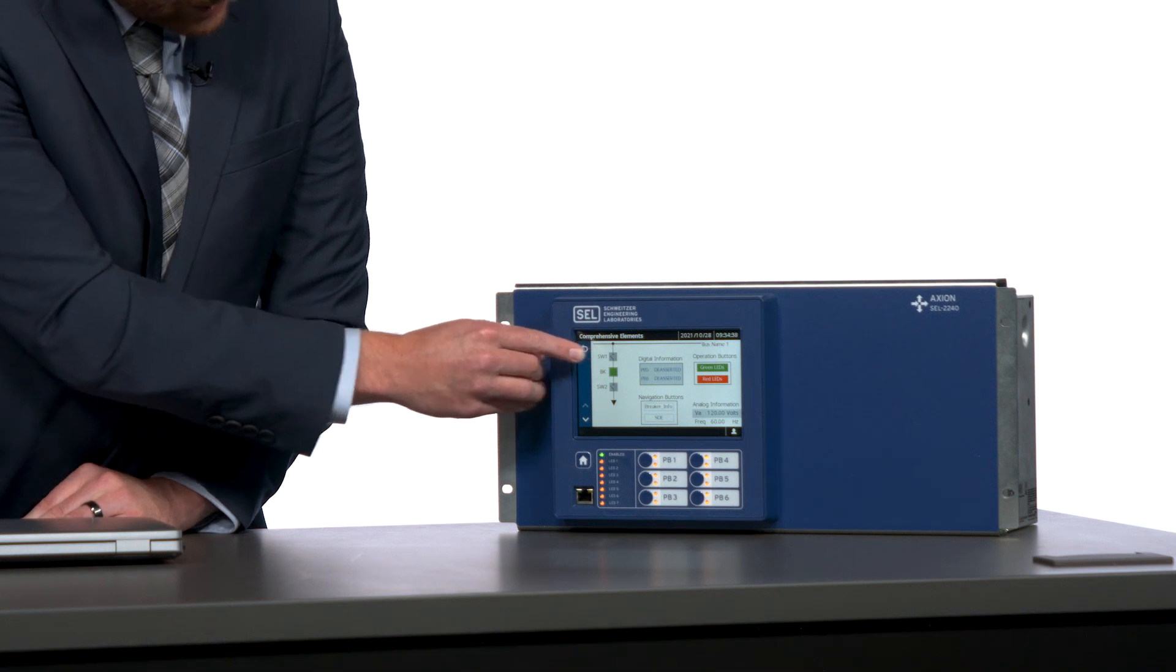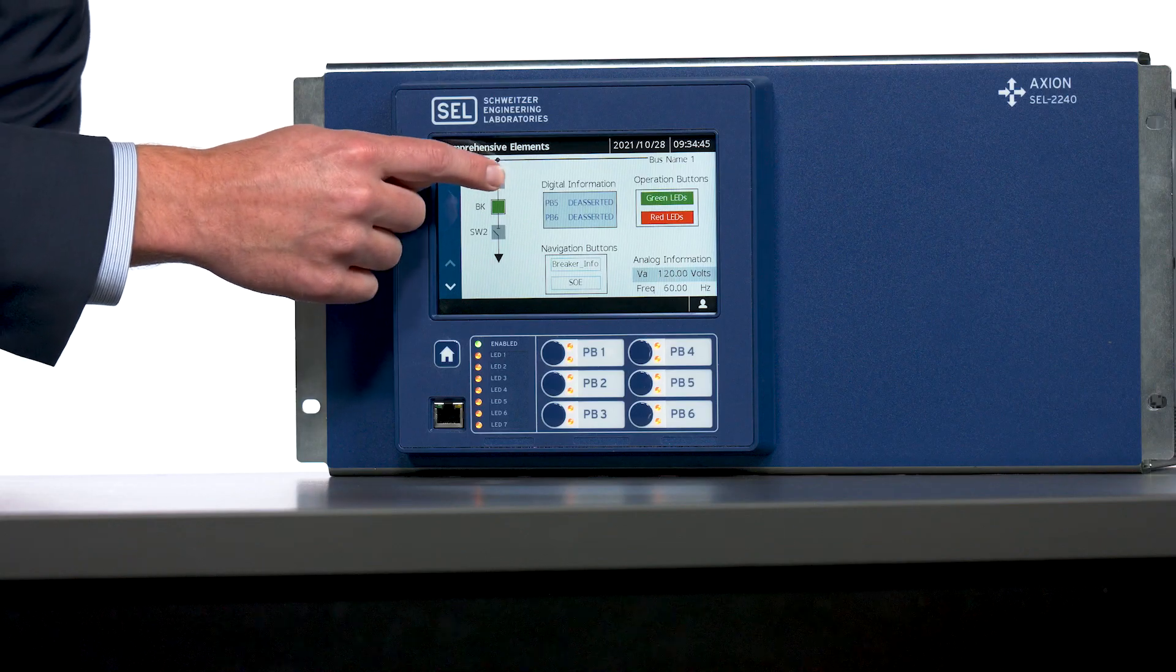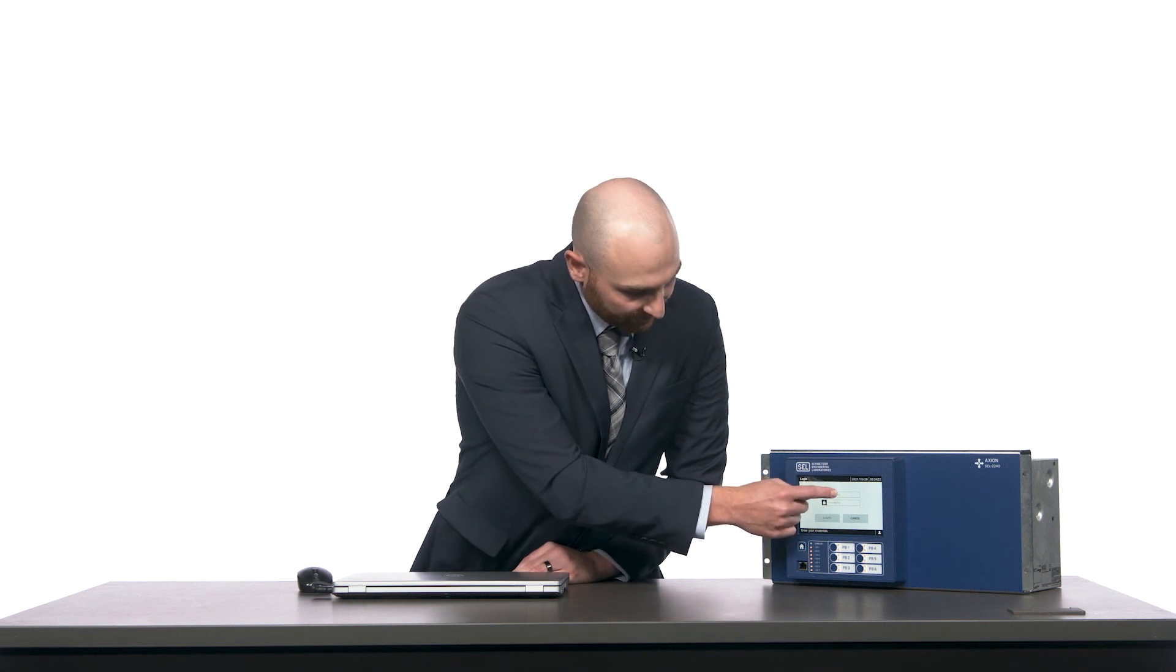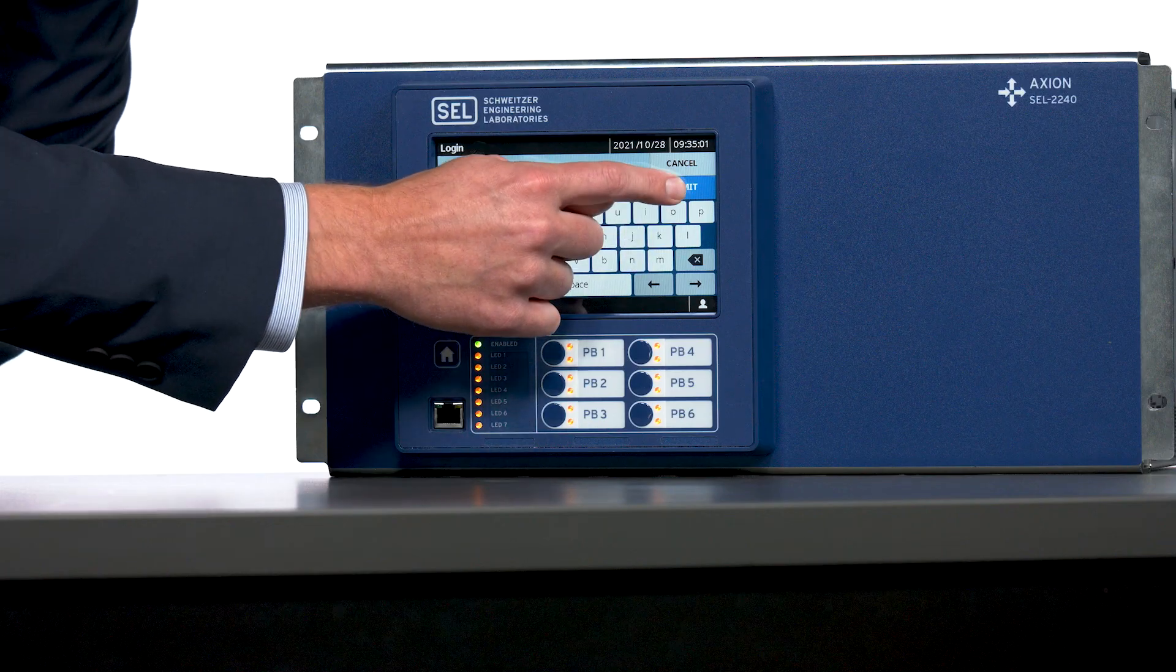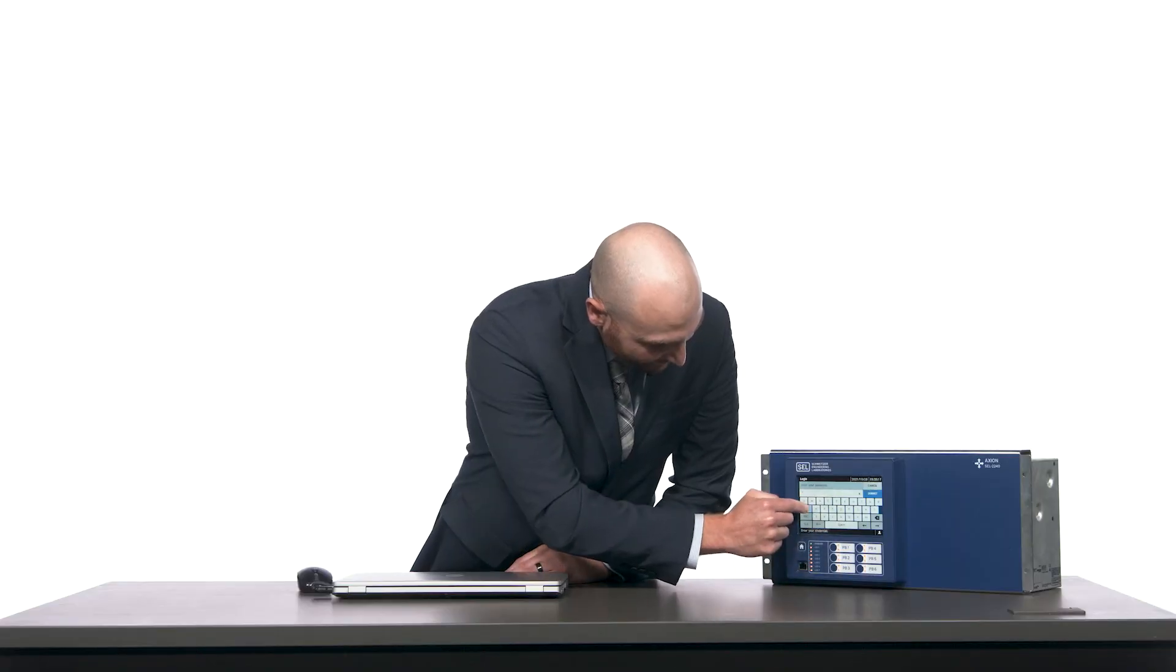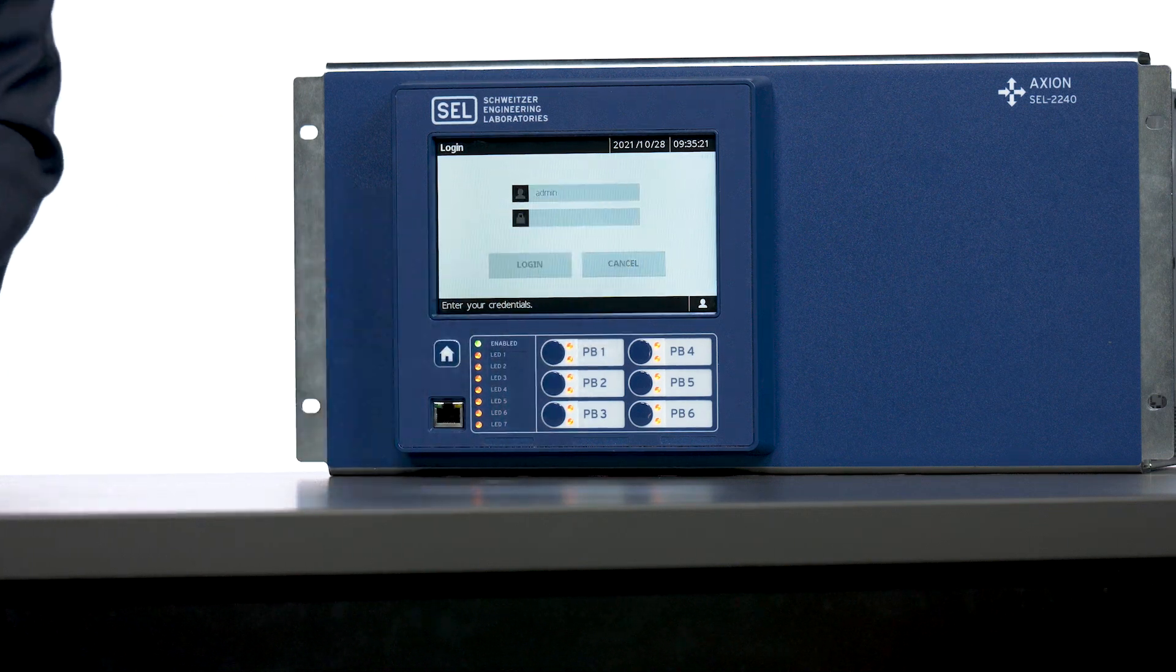We can see switch one is in the open state and I'm going to close that switch. Tapping on the switch, I'm prompted to log in using my RTAC username and password. Tapping the username field, I can enter my username. And then tapping the password field, I can now enter my RTAC password. Pressing the login button, now the RTAC validates my username and password and ensures I have the proper permission to perform this disconnect switch operation.